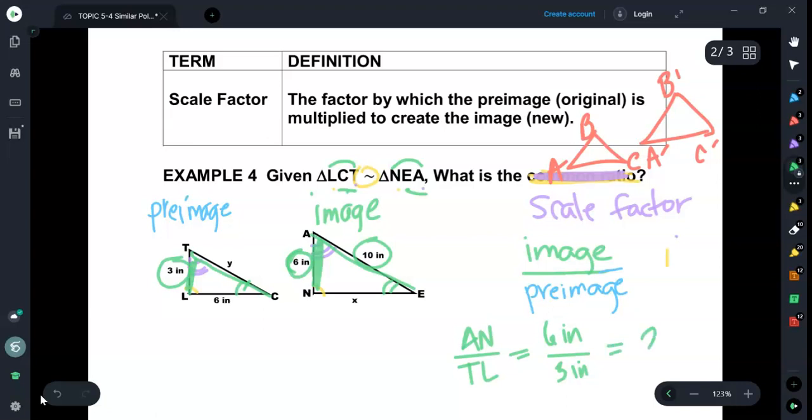Now when I reduce that, I get 2. The inches will cancel, so 2 is now our scale factor. Sometimes we'll call the scale factor K. What does that mean? That means I took this triangle and I multiplied it by 2 to get the new triangle. I multiplied this by 2 to get the image.